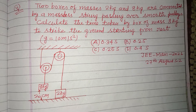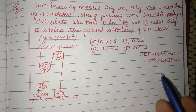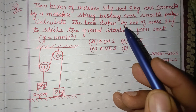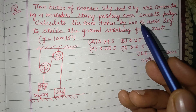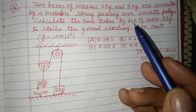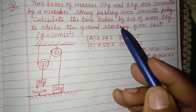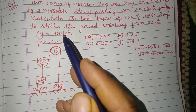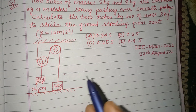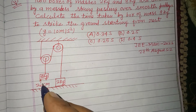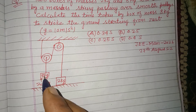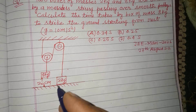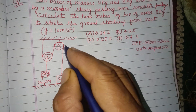Hello viewers, warm welcome to this YouTube channel. This is a question from JEE Main 2021. Two boxes of masses 2 kg and 8 kg are connected by a massless string passing over a smooth pulley. Calculate the time taken by the box of mass 8 kg to strike the ground, starting from rest, covering a distance of 20 centimeters from its initial position to the ground surface.